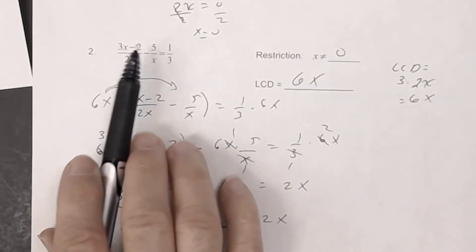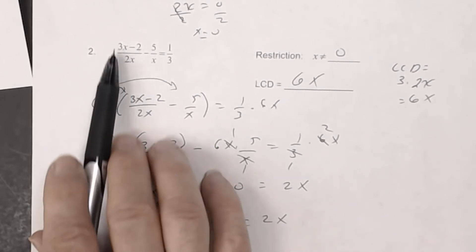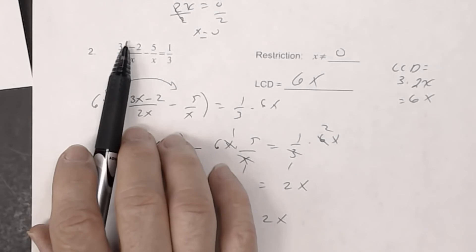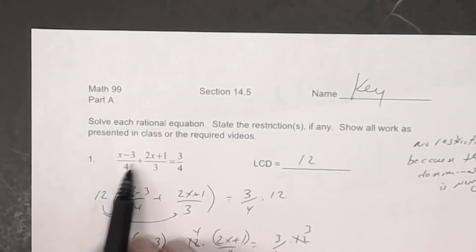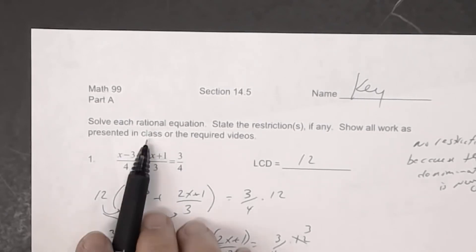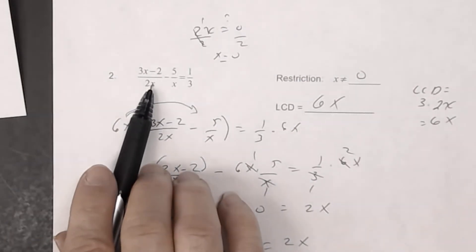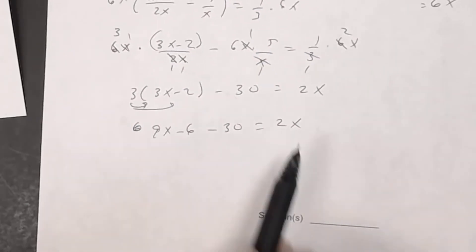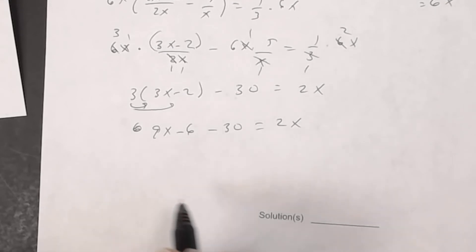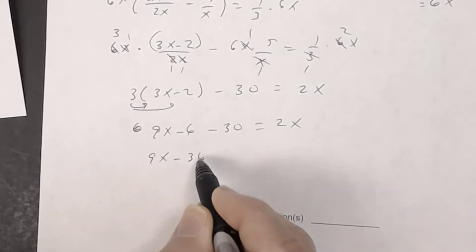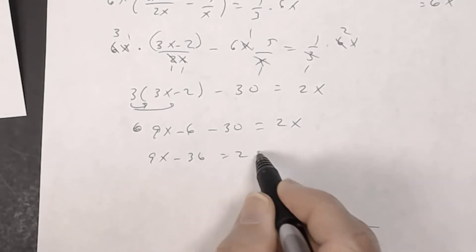Note that the original equation was rational, not linear — it had variables in the denominator. But after multiplying by the LCD, the result is a linear equation: 9x minus 6 minus 30 equals 2x. Combining like terms on the left: 9x minus 36 equals 2x.